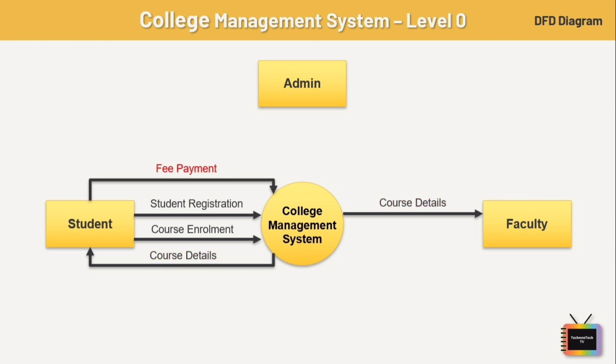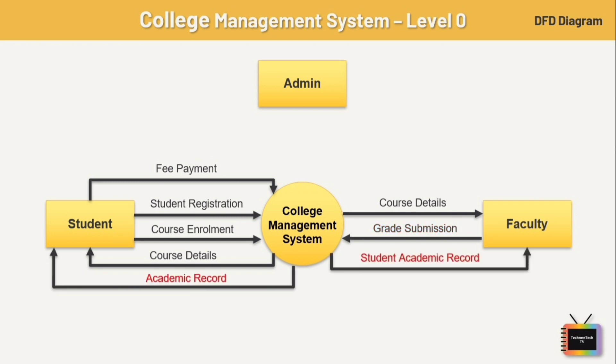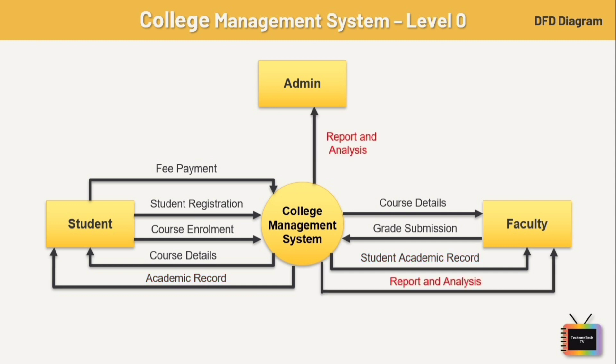Next is fee payment — after taking admission, a student will have to pay a fee for that particular course, so data flows from student to college management system to pay fees. Next is grade submission — data flows from faculty to college management system to submit grades for students. Next is academic records — data flows from college management system to student and faculty to provide access to academic records.